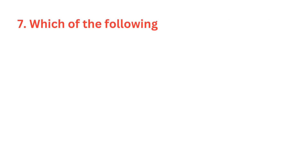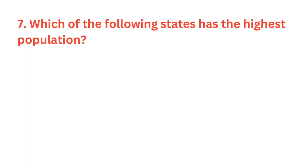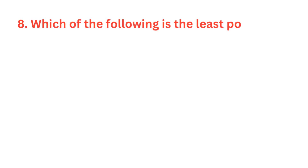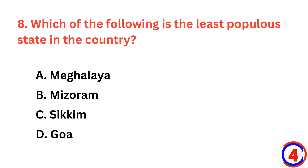Which of the following states has the highest population? The correct answer is option D, Uttar Pradesh. Which of the following is the least populous state in the country? The correct answer is option C, Sikkim.